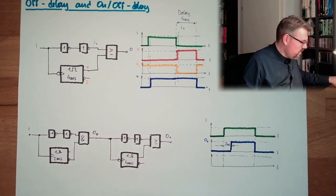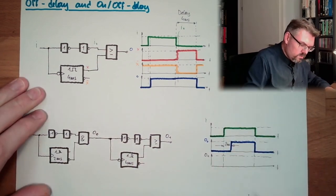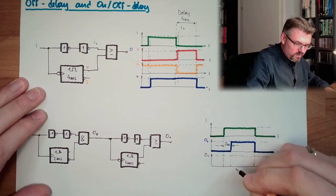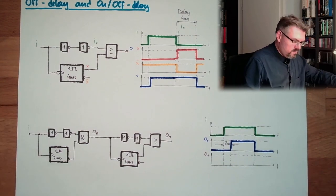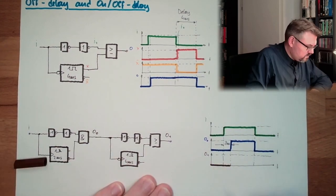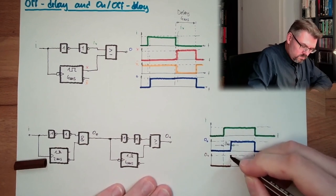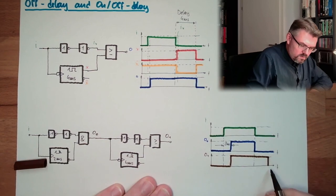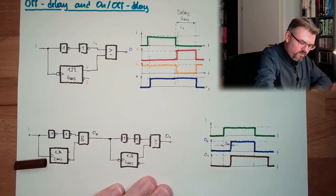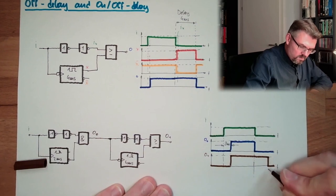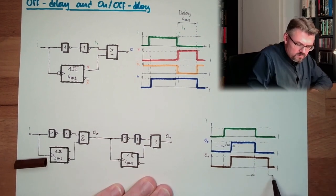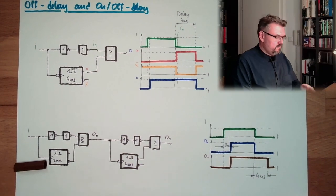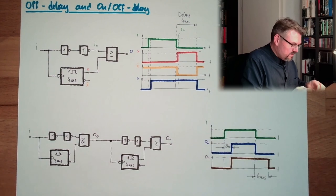So, here we have O1, it will turn ON at this point in time, and will turn OFF later, OFF delay, and here we have, then, the 4 ms of delay, alright? This is exactly how this is working.